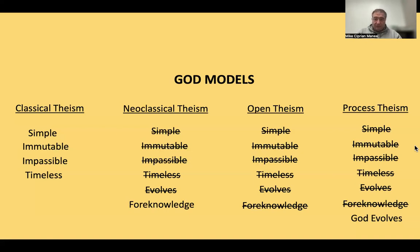We're going to run into issues about scriptural interpretation, but at least some of these models can be dismissed. I think classical theism, and I would say process theism as well, can be fairly dismissed — the Bible seems pretty straightforward that they're not a good fit for scripture. Neoclassical theism and open theism are much harder to differentiate. I would argue that if a person was unbiased and just read scripture open to both possibilities, they would probably lean towards neoclassical theism by the time they're done.